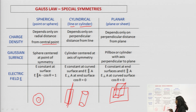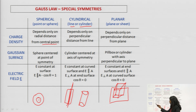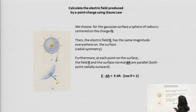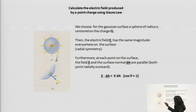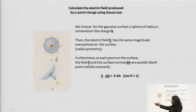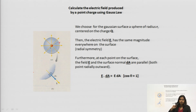During calculation of the electric field, we need to see whether E is parallel to the area or perpendicular to it. Let us calculate the electric field produced by a point charge using Gauss law. Suppose here is a point charge and we need to find the electric field at a certain point. There is a point charge Q and we need to find the electric field at some point. How do we use Gauss law in order to find the electric field? The first step is to choose the Gaussian surface.